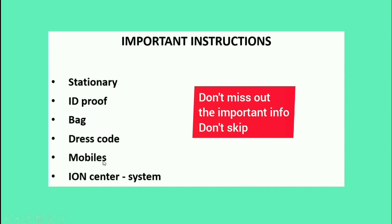Mobiles are strictly not allowed — keep your mobile inside your bag in the space provided. After this, you will move to the verification stage. Before going to the exam, you need to fill in some details on the admit card, then proceed to verification where they will check your ID proof and admit card number. Inside the ION center there will be many systems, and each candidate will be allotted one system. The people inside will instruct you to take the assessment and will provide rough paper. Once the exam starts, you enter your login ID and password.